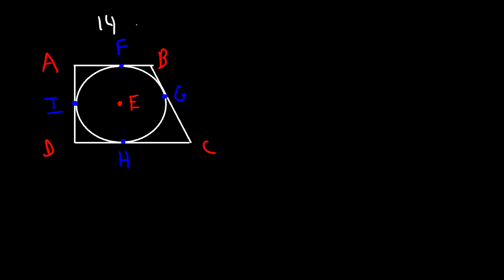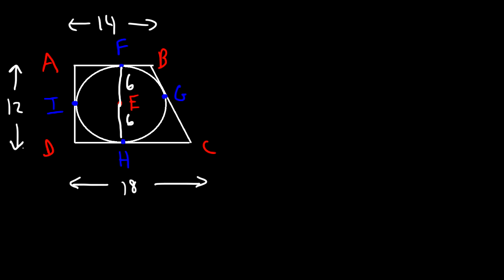Let's say AB is 14, DC is 18, and the radius of the circle is 6. Since the radius is 6, EF and EH are both 6, which means AD has to be 12. By the two-tangent theorem, tangent segments from a common external point are congruent: AF equals AI, BF equals BG, HC equals GC, and DI equals DH.